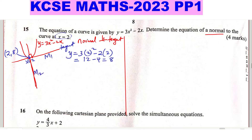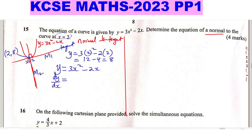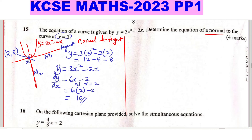To get the gradient of the tangent, we differentiate the function of the curve. The curve is y equals 3x squared minus 2x. Differentiating with respect to x gives dy/dx equals 6x minus 2. That is the gradient function. To get the exact gradient of the tangent at x equals 2, substitute: 6(2) minus 2 equals 12 minus 2, which equals 10. So the gradient of the tangent, M1, equals 10.